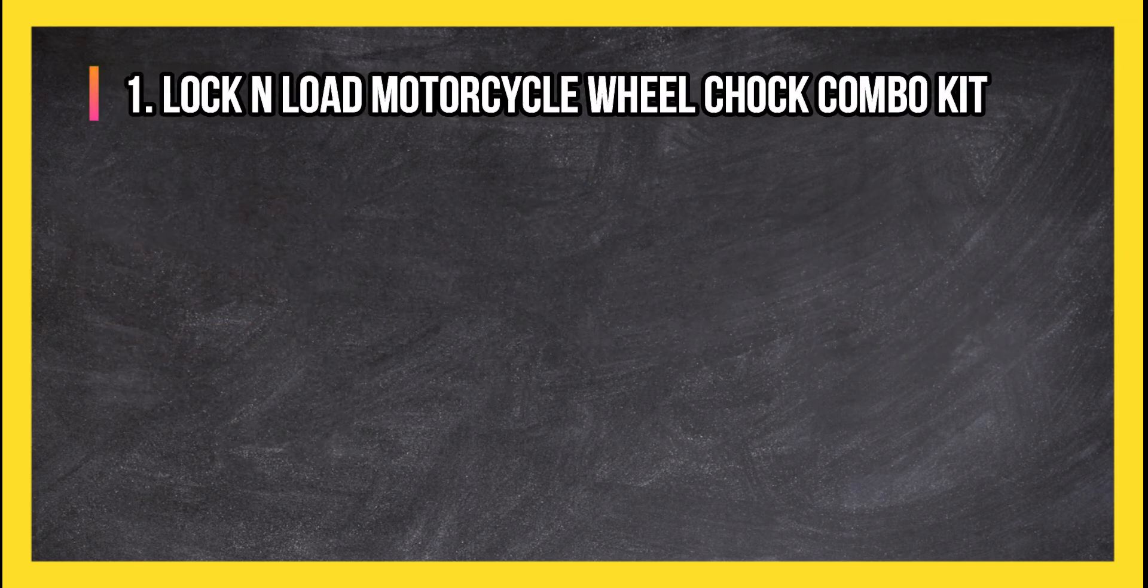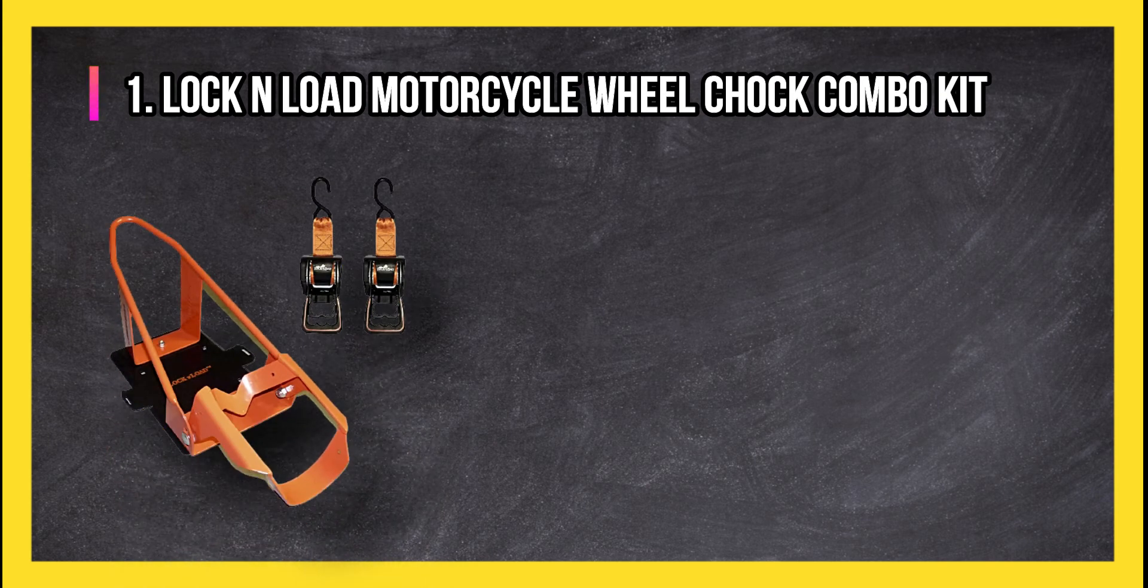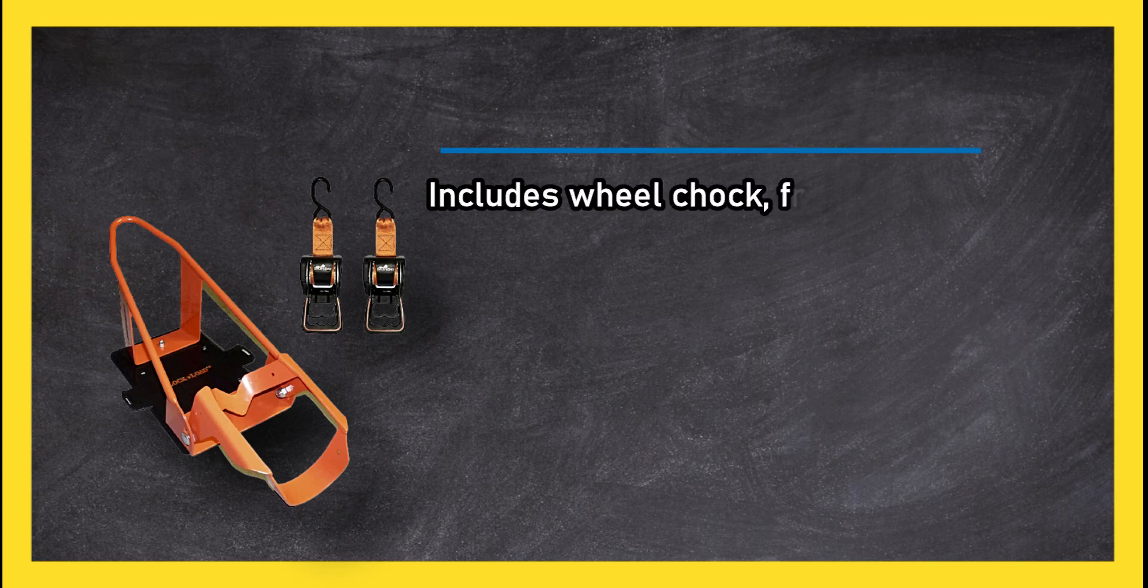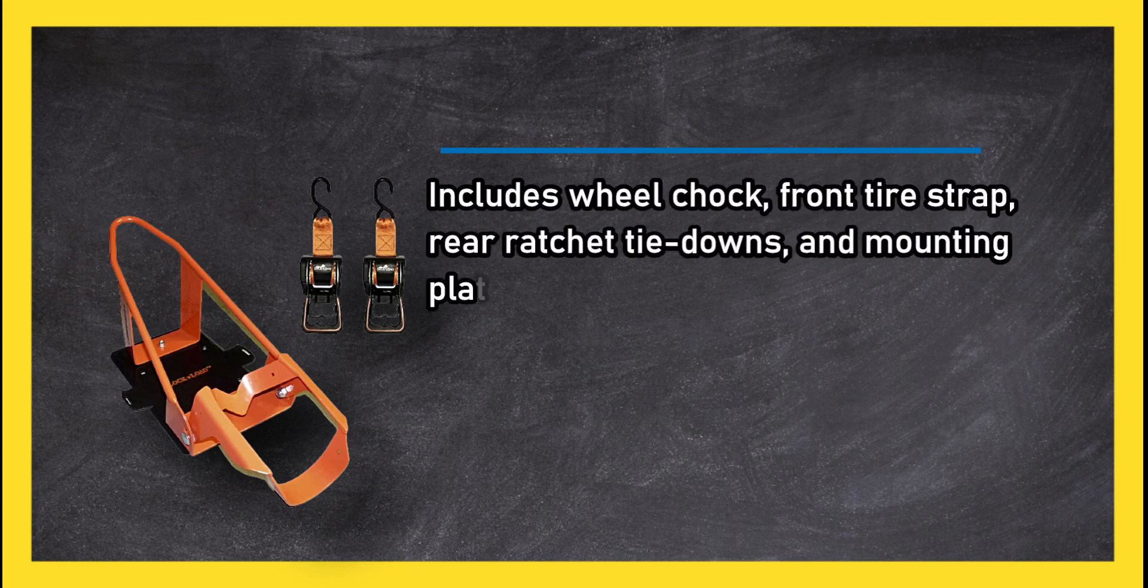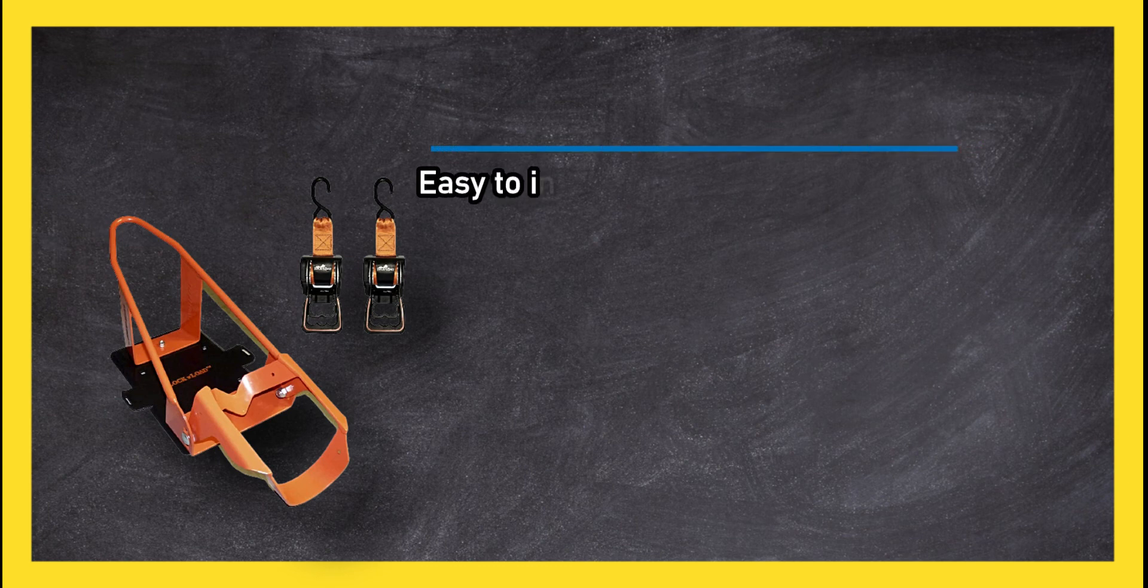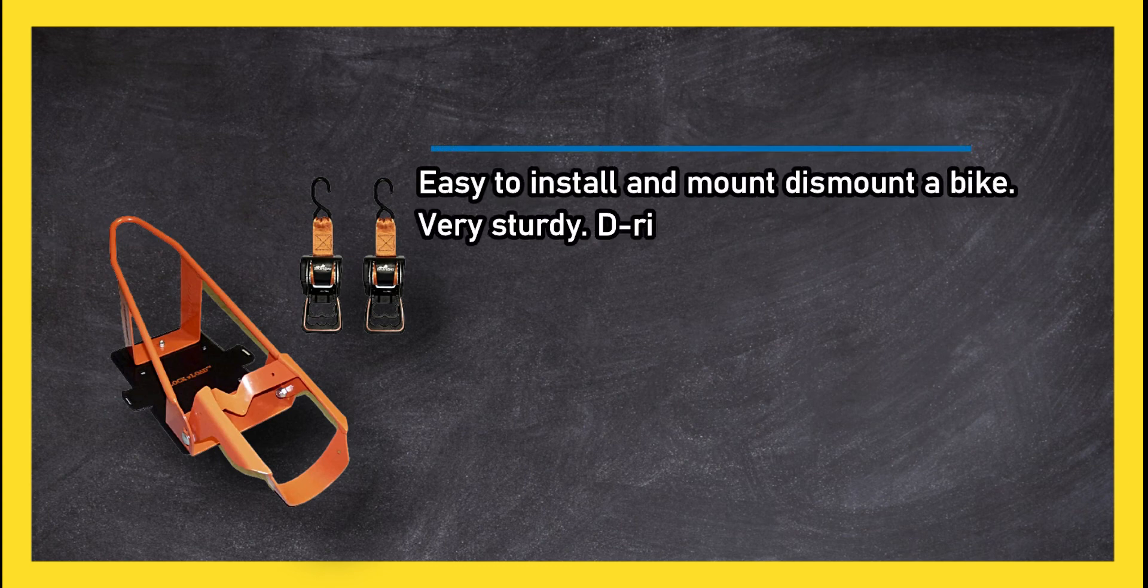At number one: Lock and Load Motorcycle Wheel Chock Combo Kit. Includes wheel chock, front tire strap, rear ratchet tie-downs, and mounting plate. For use with all sizes of motorcycles. Easy to install and mount/dismount a bike.